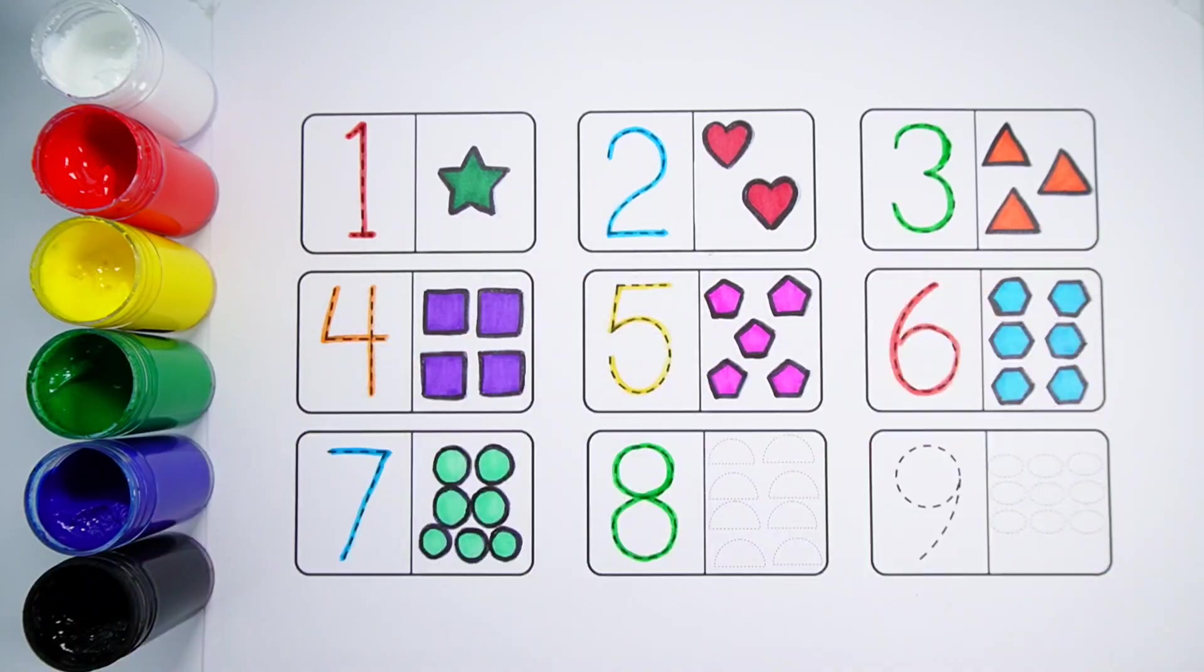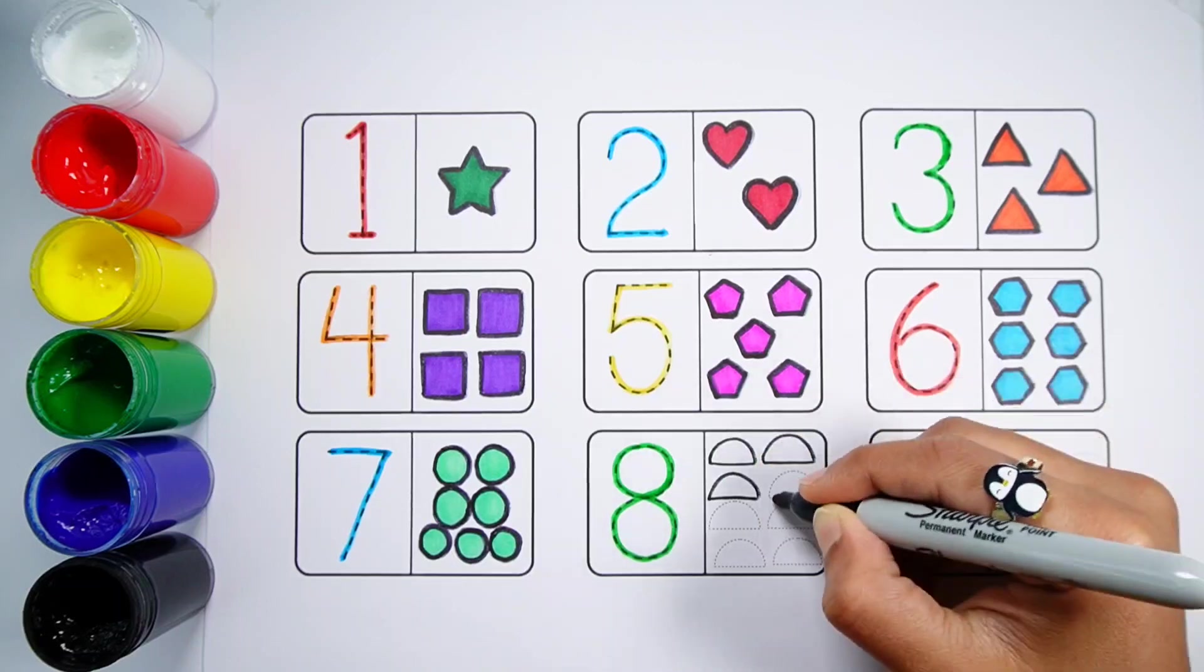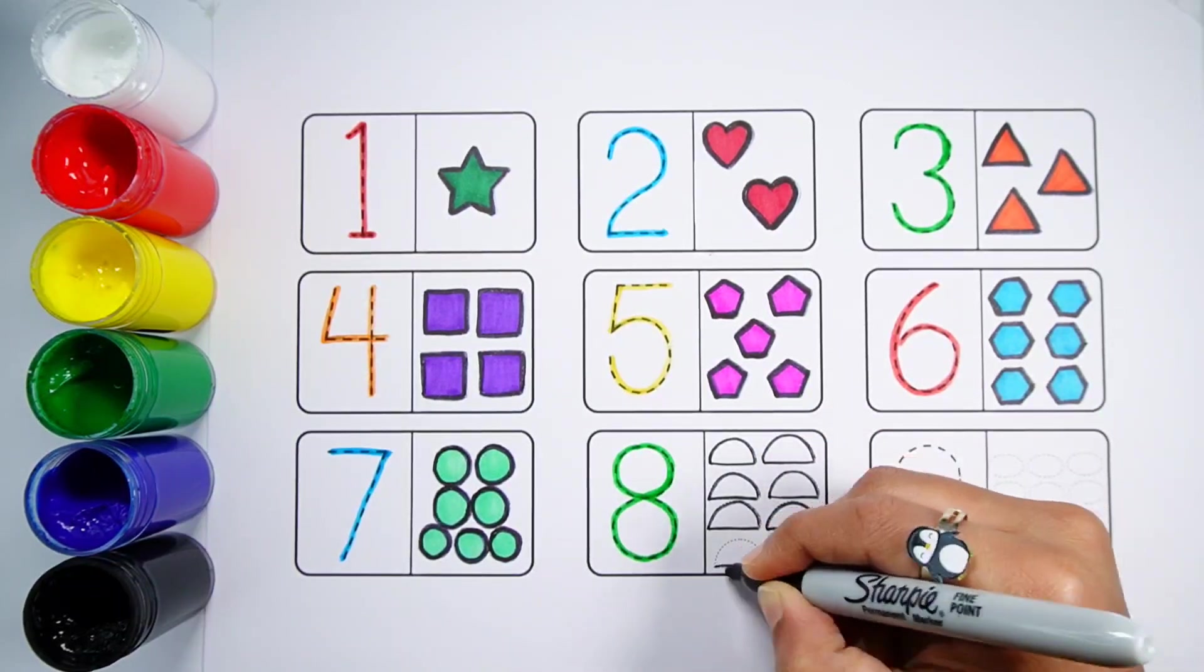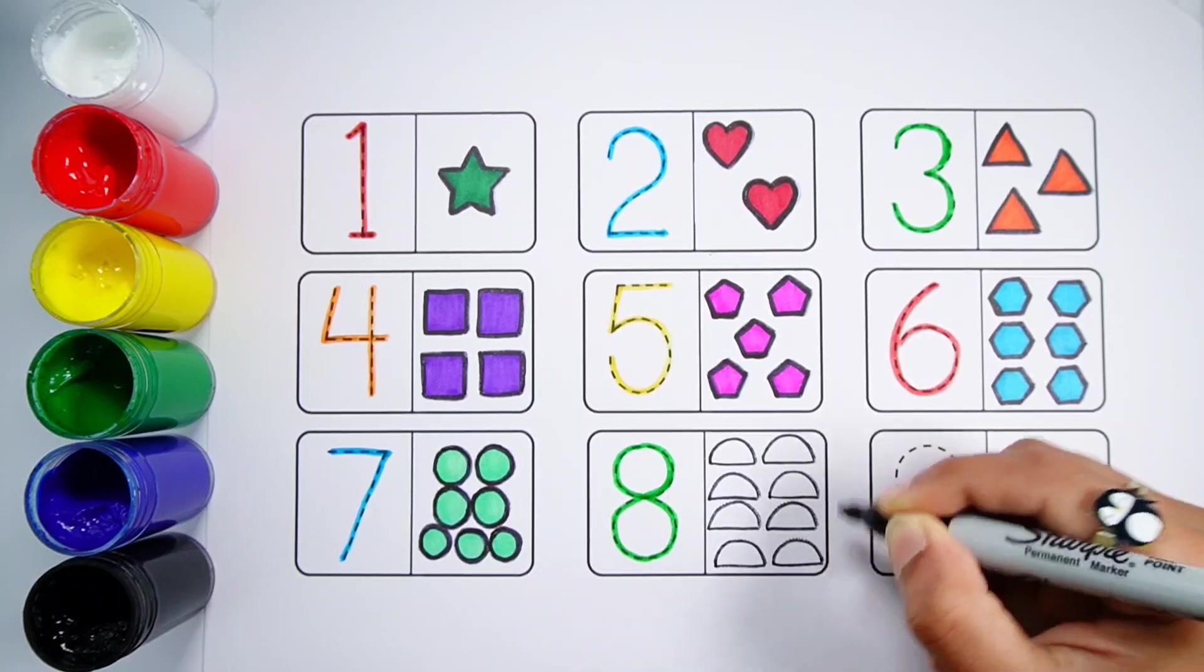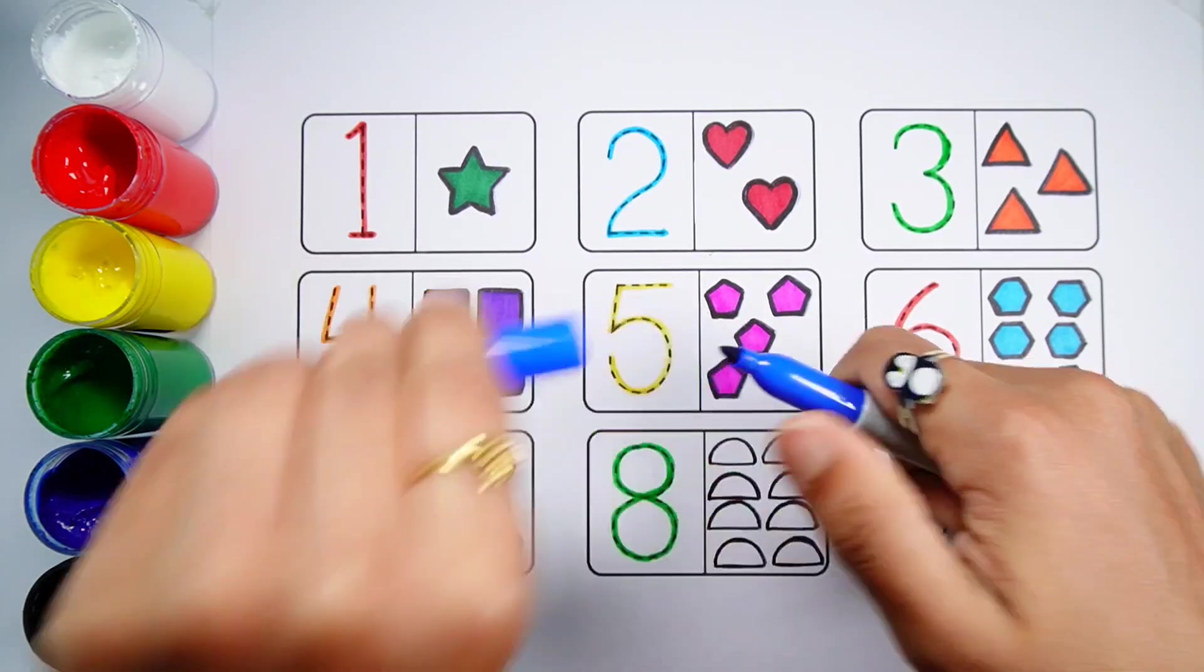Number 8. One Two Three Four Five Six Seven Eight. Eight Semi Circles. Dark Blue Color.